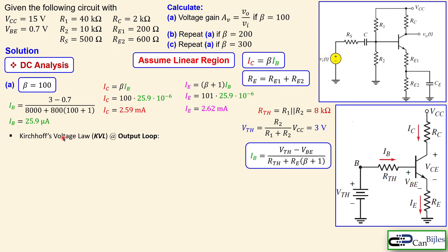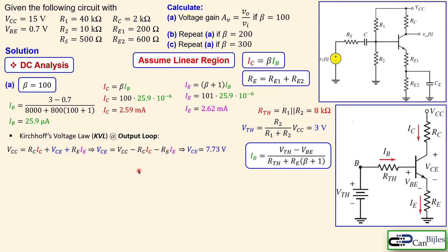For beta equals 100, using this formula we obtain the DC base, collector, and emitter currents. Using Kirchhoff's voltage law at the output loop, VCC equals the voltage across the collector resistor plus VCE plus the voltage across RE (the combination of RE1 and RE2), giving VCE of approximately 7.73 volts.